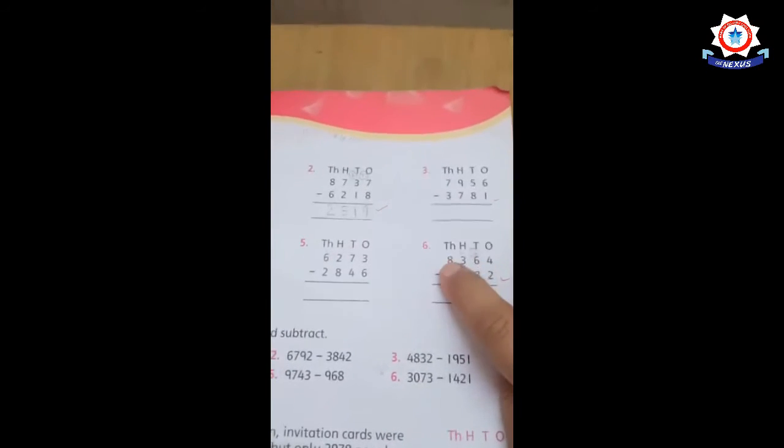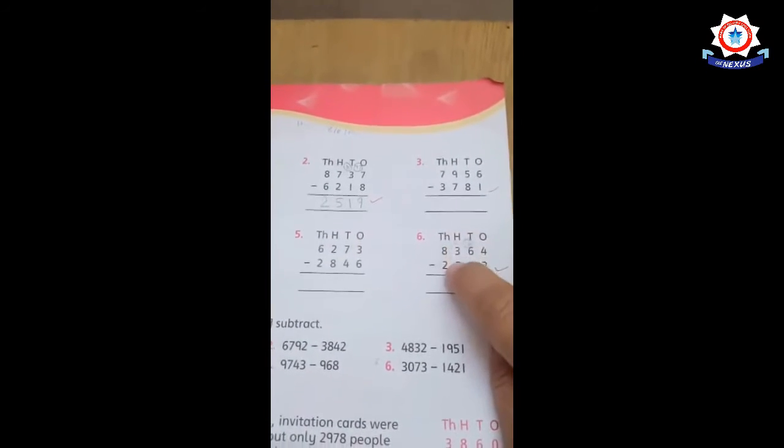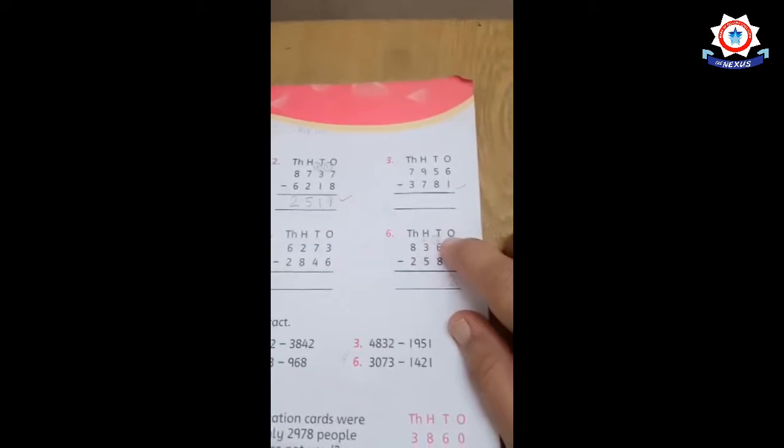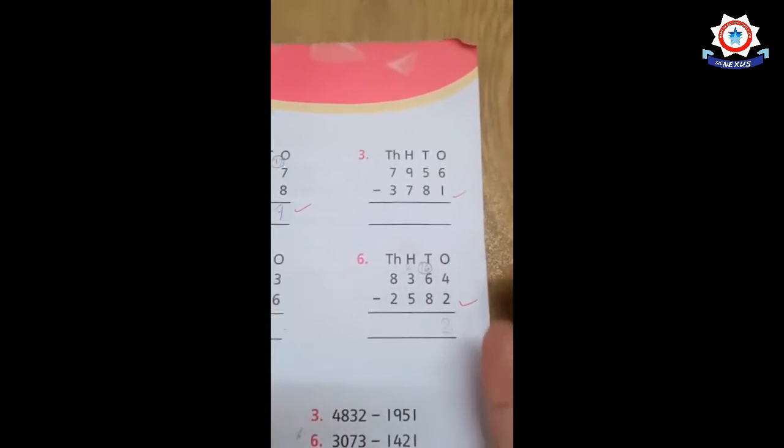2 minus 5 is not possible, so we have to borrow from the next column too. Then when the total number is formed, we will draw the circle. Now you subtract 8 from 16.